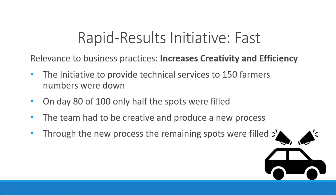How does being fast relate to today's business practices? If a business cannot receive results at a fast rate, they will become obsolete and fall behind the curve. The article focused on creative and effective solutions. One initiative — providing technical support to 150 farmers in a drought area — was struggling. By day 80, only half the slots were filled and the team was becoming disheartened. However, a quick and creative new process was put in motion: team members jumped into their cars and trucks, drove out to villages, and from loudspeakers announced that technical support would be provided to farmers who signed up. In no time, all remaining spots were filled, allowing the initiative to succeed.